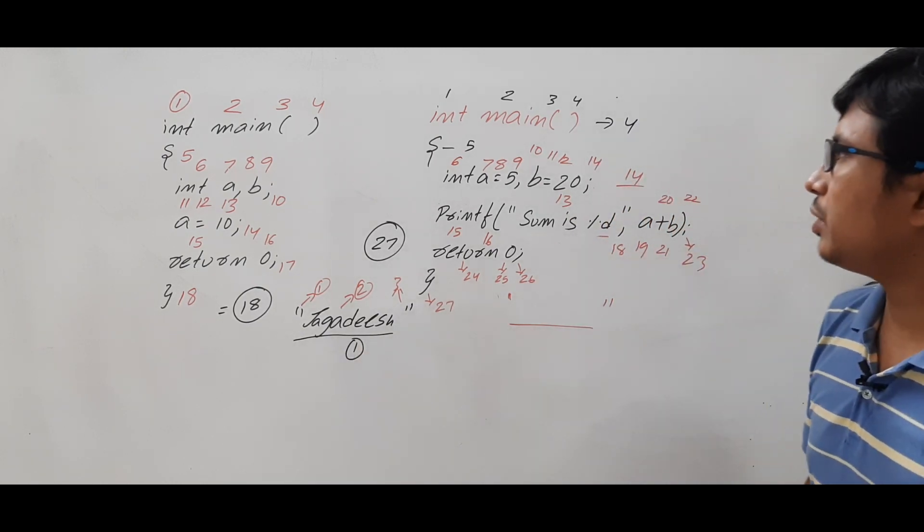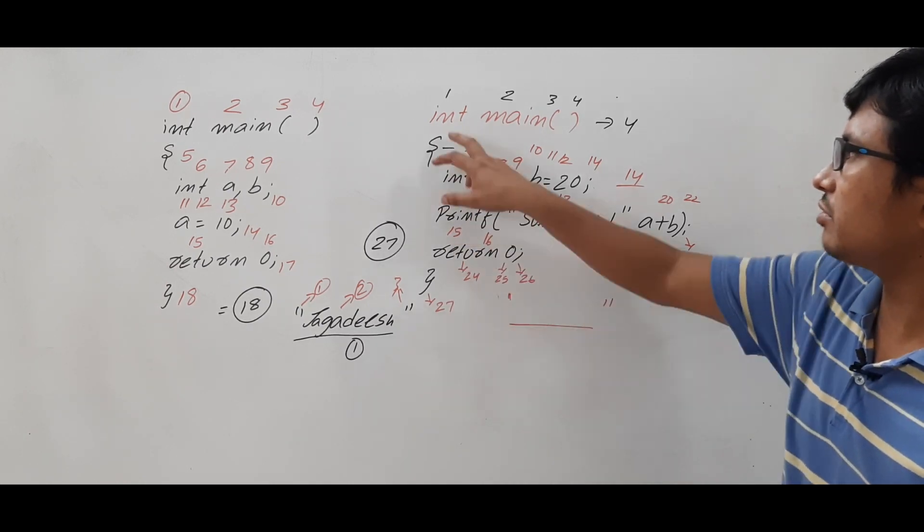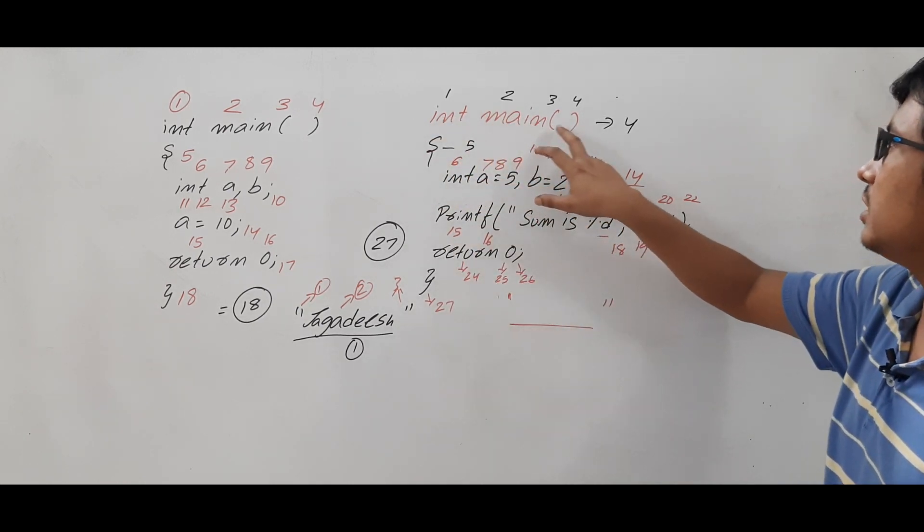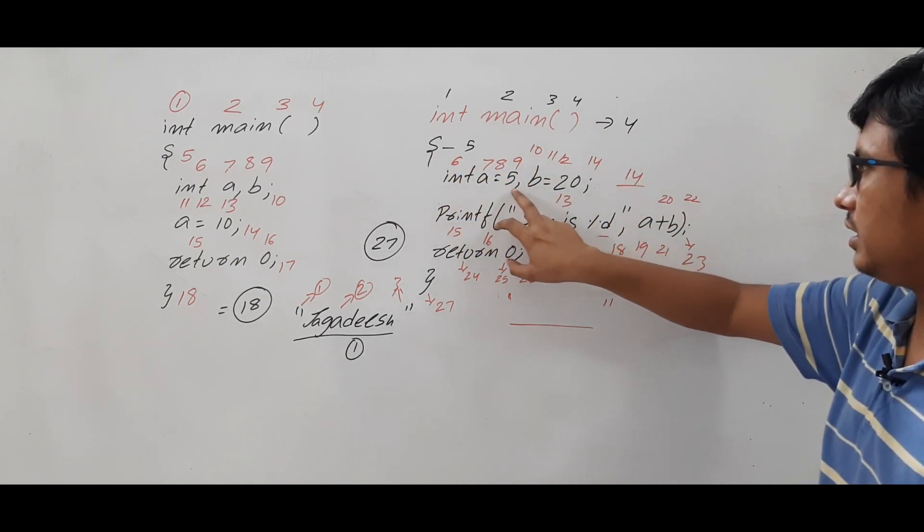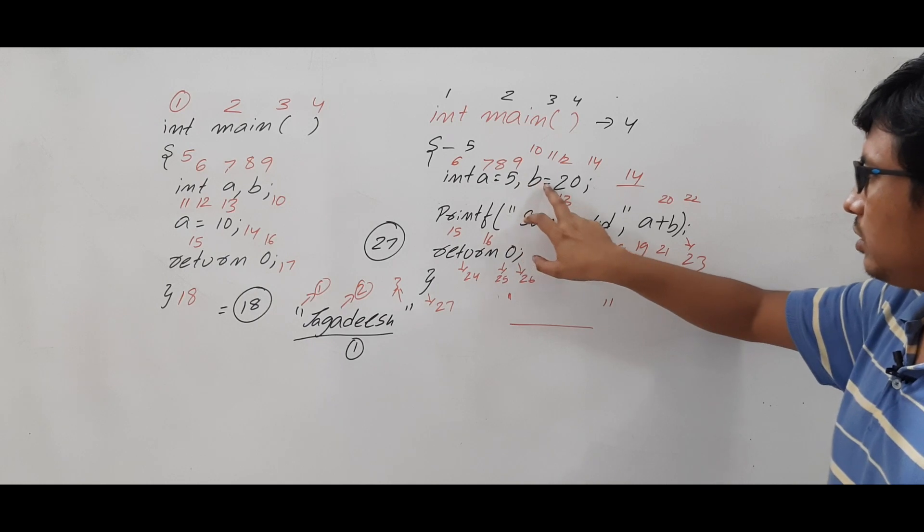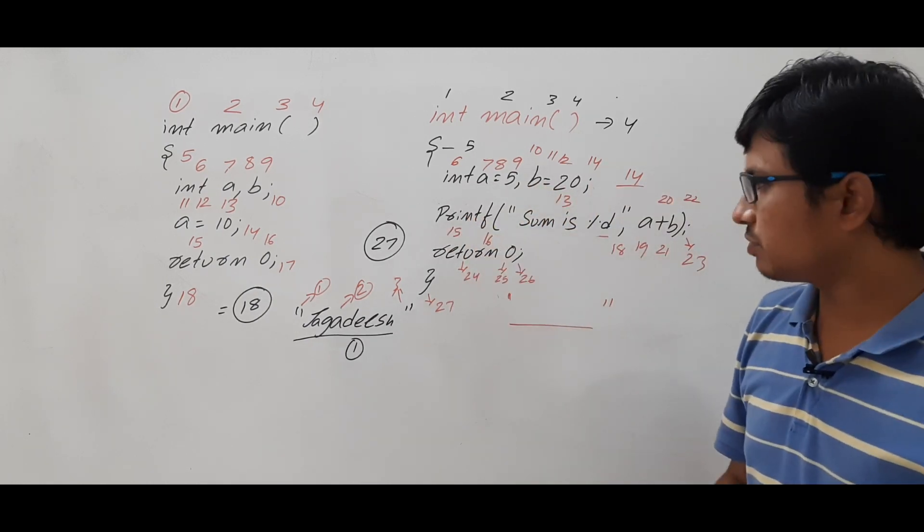I hope you have understood. Even I have counted all the tokens correctly, if you want to verify you can verify. 1, 2, 3, 4, 5, 6, 7, 8, 9, 10, 11, 12, 13, 14. Then printf is 15.